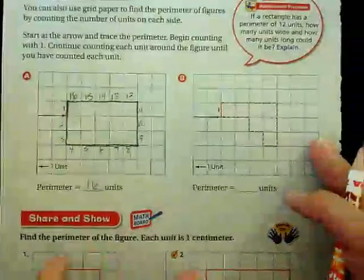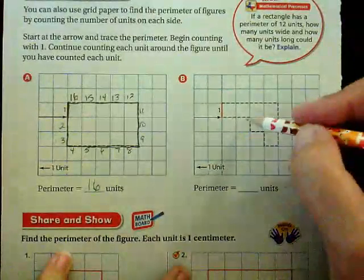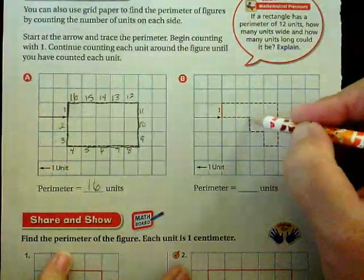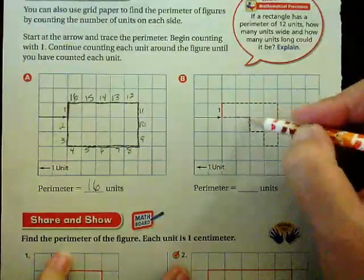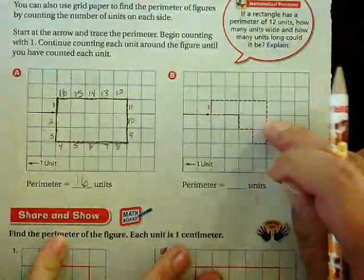All right. Now let's try B. B is going to be a little bit trickier, especially when we get into the corners. You have to make sure you count both of them. So let's try this together. Let's find the perimeter of this figure.